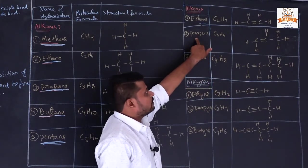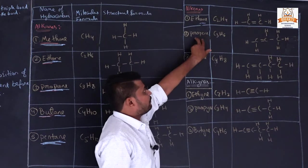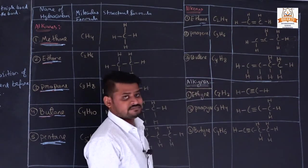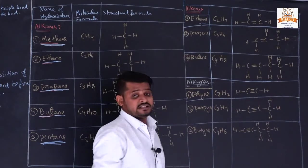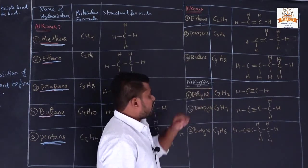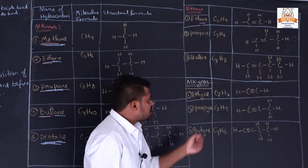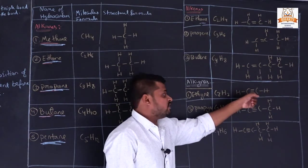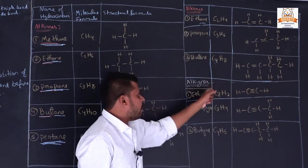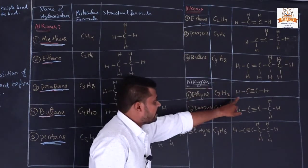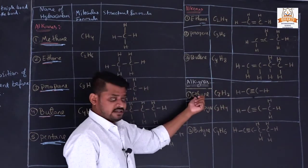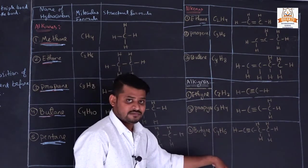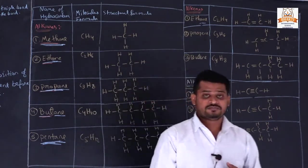If the number of carbon atoms is 3 with a double bond, it is propene. Number of carbon atoms is 4 with double bond: butene. Now alkynes — why is it called '-yne'? Because in this structural formula carbon atoms are combining with each other with a triple bond. For triple bonds we use '-yne'. With 2 carbons: ethyne; 3 carbons: propyne; 4 carbons: butyne.